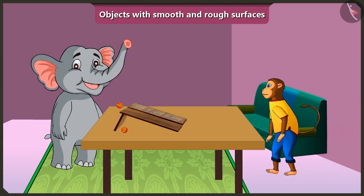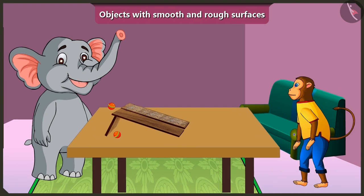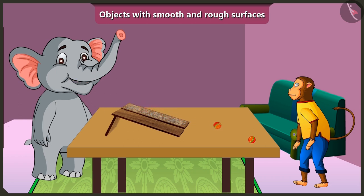Hey Appu, what are you doing here? Look Jaggu, I have two similar balls. When I roll them like this, the ball rolls down faster on this wooden slope, but on this other slope the ball rolls down slowly. Why is it so, Jaggu?